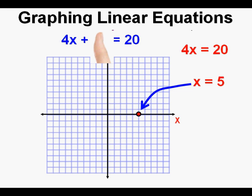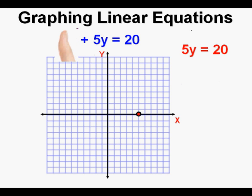Now we find the y-intercept by covering up the x-term, setting x equal to 0. That gives us 5y equals 20. We solve for the y-intercept by dividing both sides by 5, so our y-intercept is 20 divided by 5, which equals 4. We graph the point along the y-axis at 4.